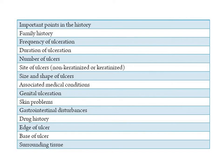For diagnosis, you have to take history, see and examine the lesion, and examine all systems such as the gastrointestinal system. Specifically: family history, frequency of ulceration, duration, number of ulcers, site — whether non-keratinized or keratinized. Minor aphthous ulcer is the most common, and its site is non-keratinized. If you see an ulcer in keratinized mucosa, consider other ulcerations such as herpetic ulcers. Major aphthous ulcer is very rare.